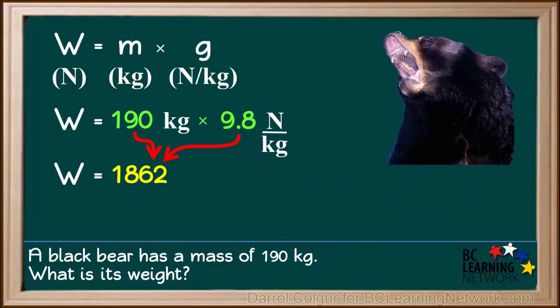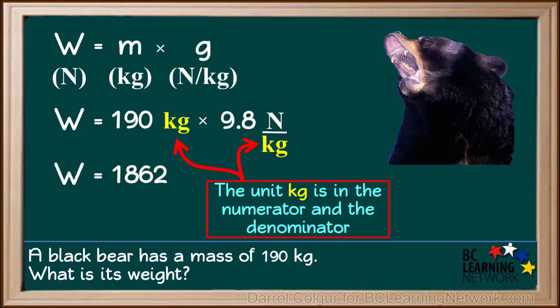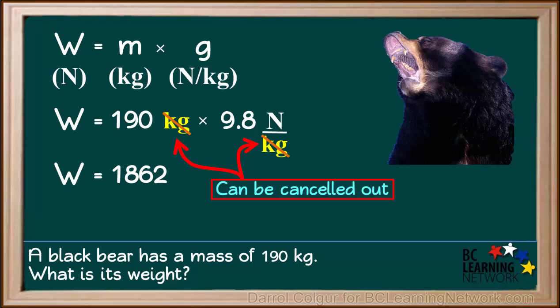190 times 9.8 is equal to 1862. We can see that the unit kilograms is in the numerator and the denominator, so they can be cancelled out, leaving us with only newtons as a unit. So, the unit for our answer is in newtons. So, W is equal to 1862 newtons. And we can state the final answer as the weight of a 190 kilogram bear is 1862 newtons.